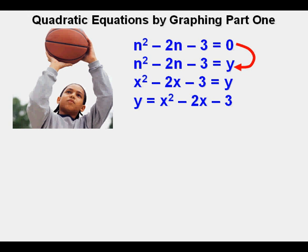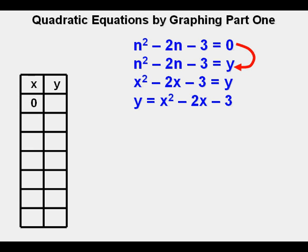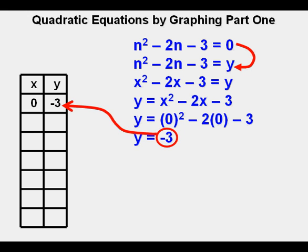Joe now creates a table where he will obtain points to be graphed. He starts with the input of 0. Joe sees where he needs to substitute for each x in the function to evaluate for x = 0. So this is the 0 plugged into the function. This simplifies to y = -3.